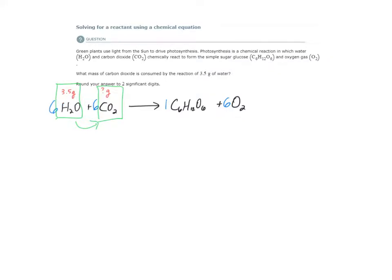So our starting point is 3.5 grams of water. We need to first convert this to moles so that we can use the coefficients from the balanced equation as a mole ratio, a conversion factor. So we have 18.02 grams of water is 1 mole.